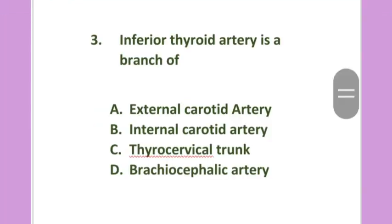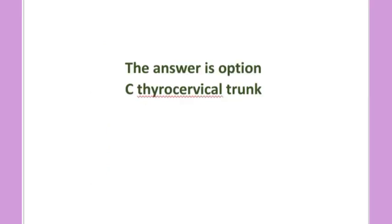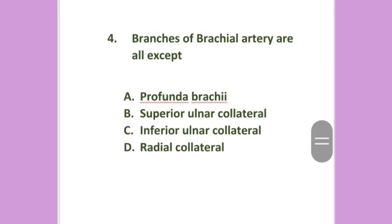Inferior thyroid artery is a branch of: external carotid artery, internal carotid artery, thyrocervical trunk, or brachiocephalic artery. The answer is option C: thyrocervical trunk.